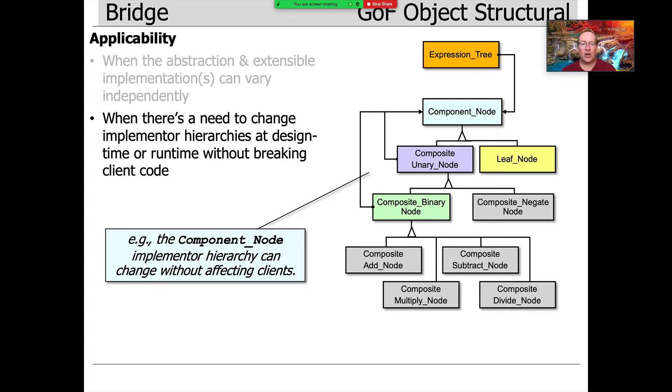And notice how we can also use this pattern to extract away from the representation details of the underlying composite structure itself. So maybe we have one implementation where the component binary node inherits from composite unary node. Maybe we have a different implementation where composite binary node inherits from component node. You would be surprised at how much people argue strenuously whether you should do this or this.